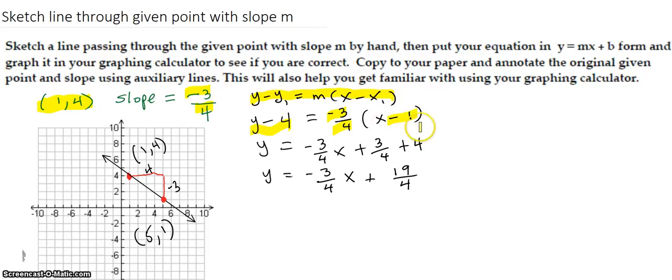And then when you simplify with the algebra, you multiply the negative 3 fourths over distribute. Then you clean it up with the algebra and you get this.